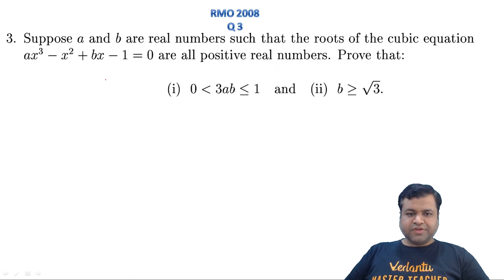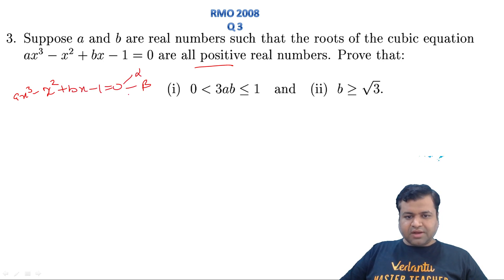So let's start the session. This is a question of inequalities. The question says that let a and b are real numbers such that the roots of the cubic ax³ - x² + bx - 1 = 0 are all positive. We need to prove two things. First let's say the roots of this cubic are α, β, γ, which are all positive. So α + β + γ, sum of the roots, that will be 1/a, obviously which is from formulas.